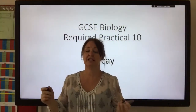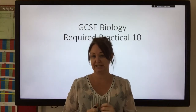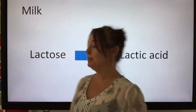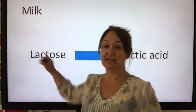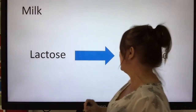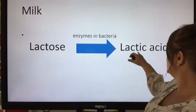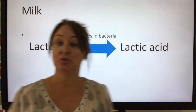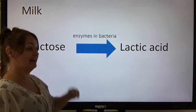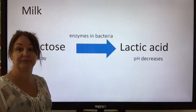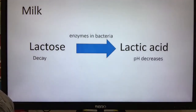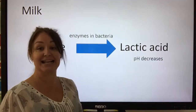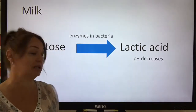This is a required practical for GCSE biology. We're looking at the decay in milk. Normally milk has a type of sugar called lactose, and what happens is it gets broken down into lactic acid. It's broken down by enzymes found naturally in bacteria which naturally live in milk. As the lactose decays and turns into lactic acid, the pH of the milk decreases.